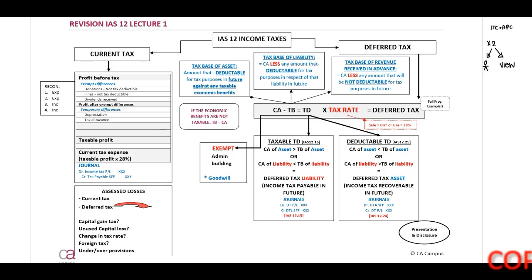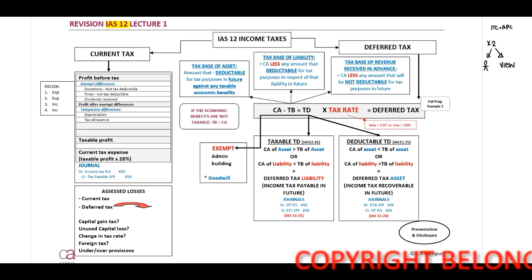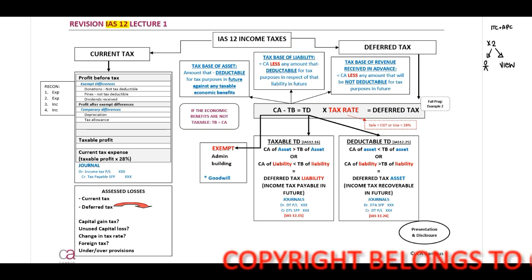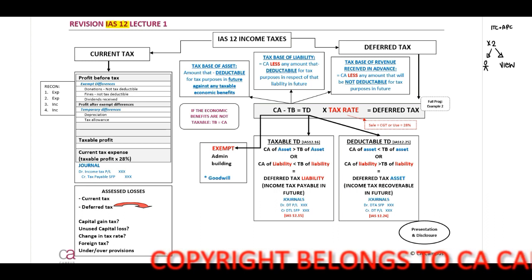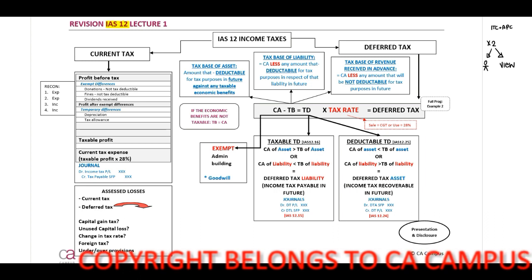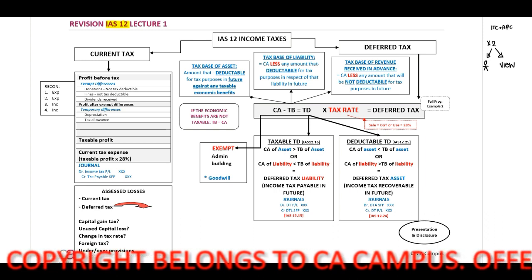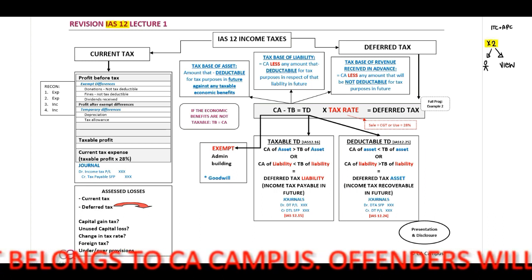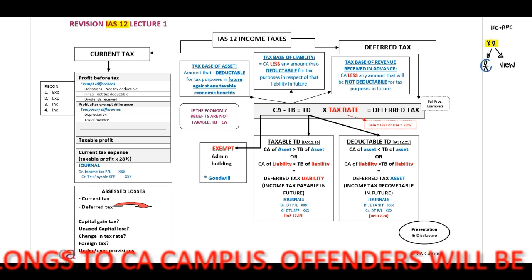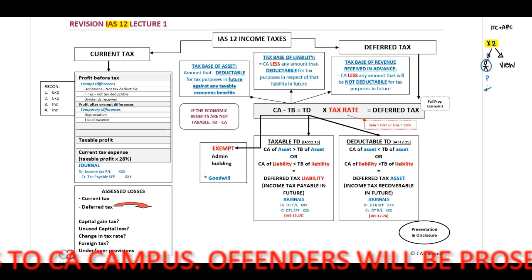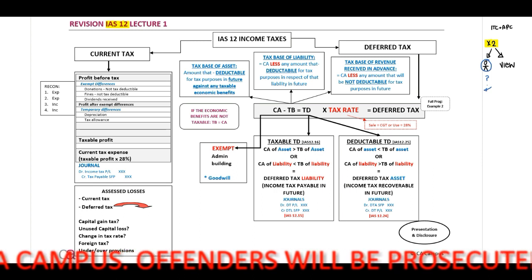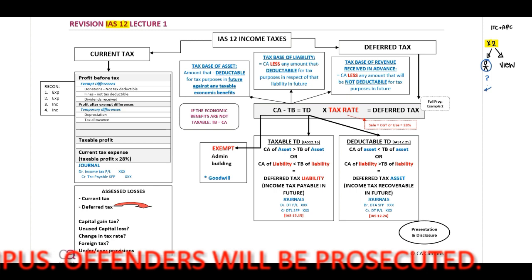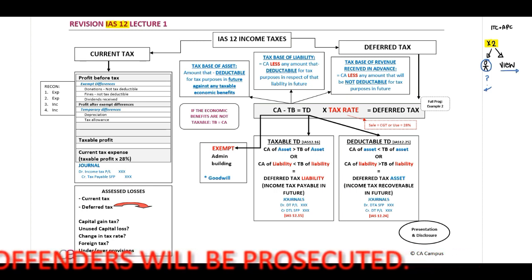Welcome to your first revision lecture on IAS 12. The purpose of these summary revision pages is that I've included the majority of important principles onto one or two pages per standard, because at the end of your CTA syllabus you have quite a lot of things to remember. My recommendation: print out two copies. The first copy you need to make your own — when you do questions, add principles that you tend to forget or which you've identified are not on this page.